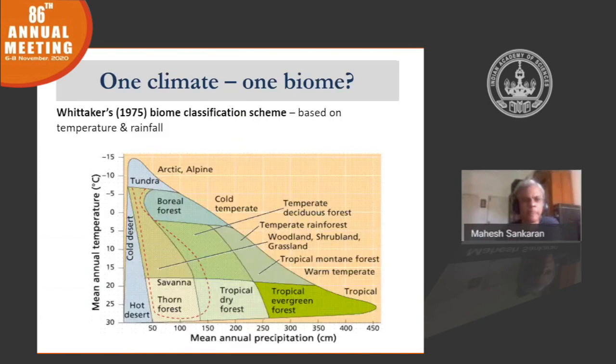Here's another such diagram. This is from Whittaker 1975. Whittaker uses just two climatic variables, which are precipitation and temperature. The idea being that if you know precipitation and temperature, you should be able to predict the biome that is likely to occur under these climatic conditions — in other words, one climate, one biome. These ideas have been intrinsically intertwined into the concept of a climax community or climax vegetation that has pervaded ecological thinking for a long time.